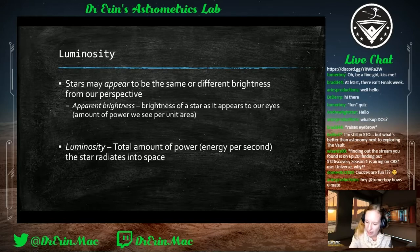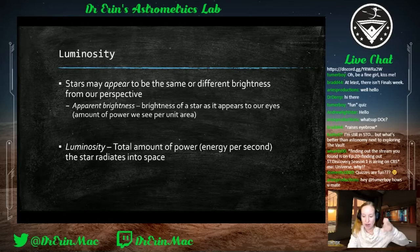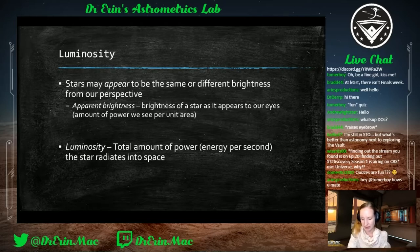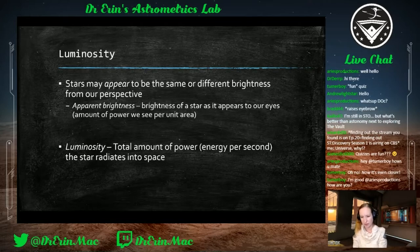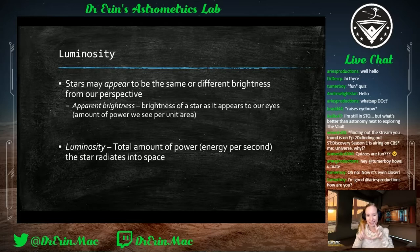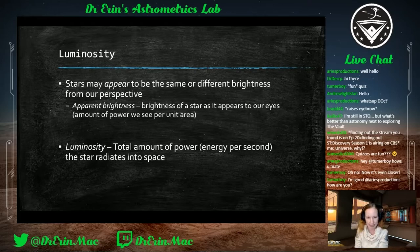For example, Procyon and Betelgeuse are two of the Winter Triangle stars and they appear to be the same brightness in the sky, but Betelgeuse is actually 15,000 times as bright as Procyon — it's just much further away. This is the difference between apparent brightness versus the actual luminosity being radiated out. We calculate apparent brightness as the amount of power we see here on Earth per unit area.